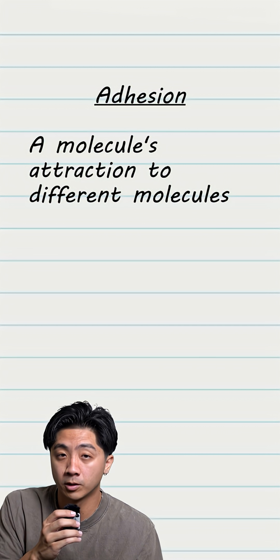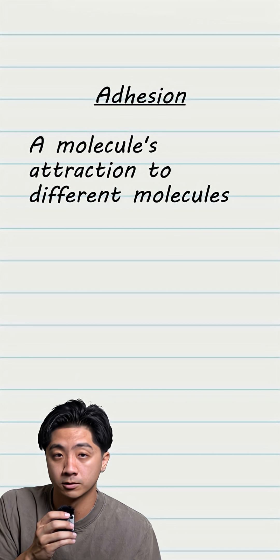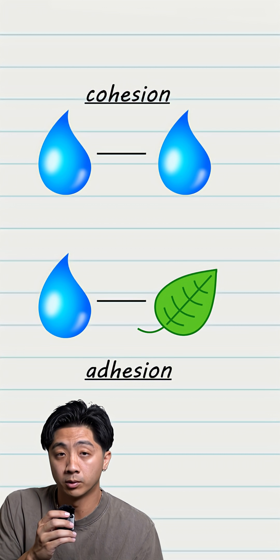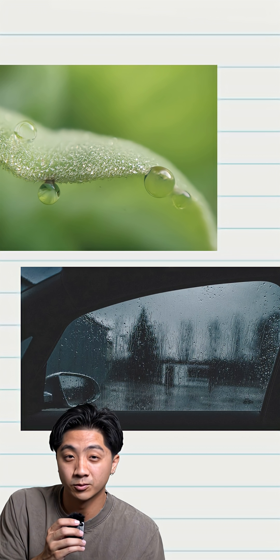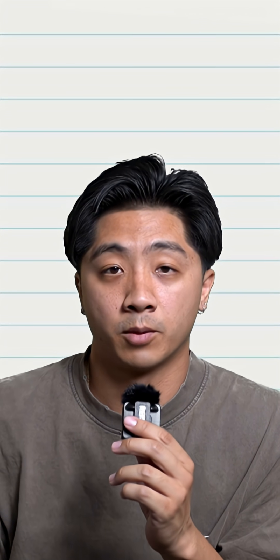The last thing is adhesion. This refers to a molecule's attraction to different molecules. Other molecules can also be polar, which is why water can also be attracted to them. You've probably noticed this when you look out a car window in the rain. And that's everything you need to know for this topic.